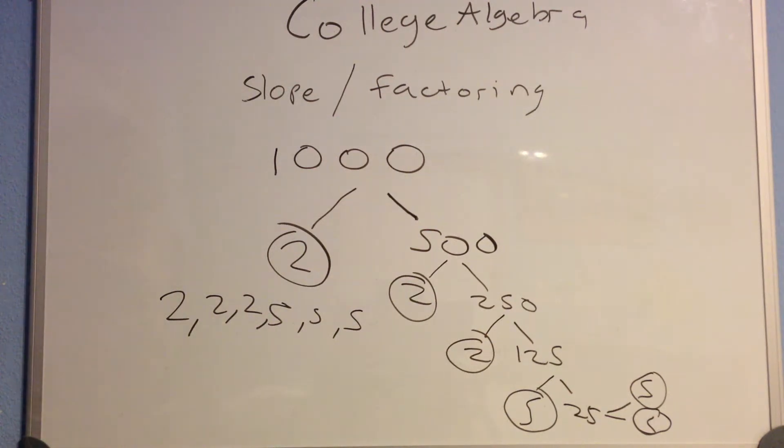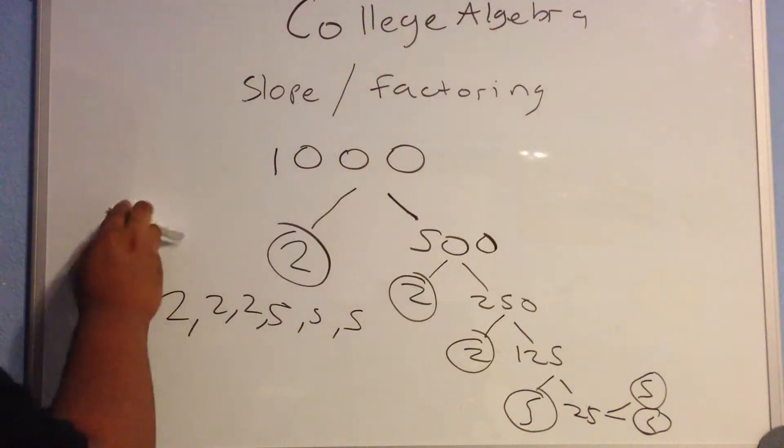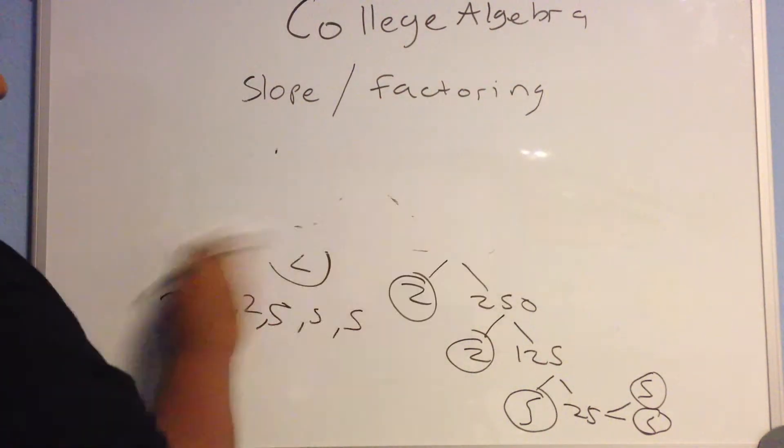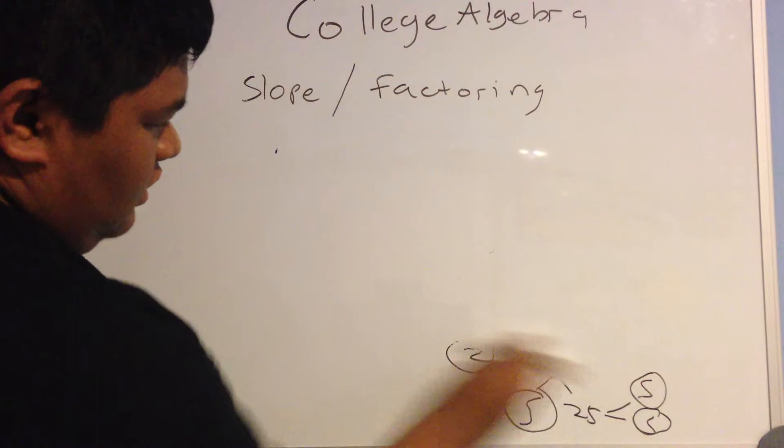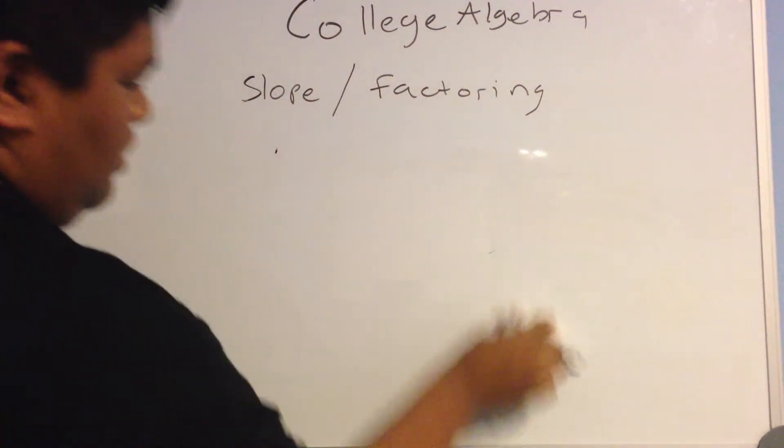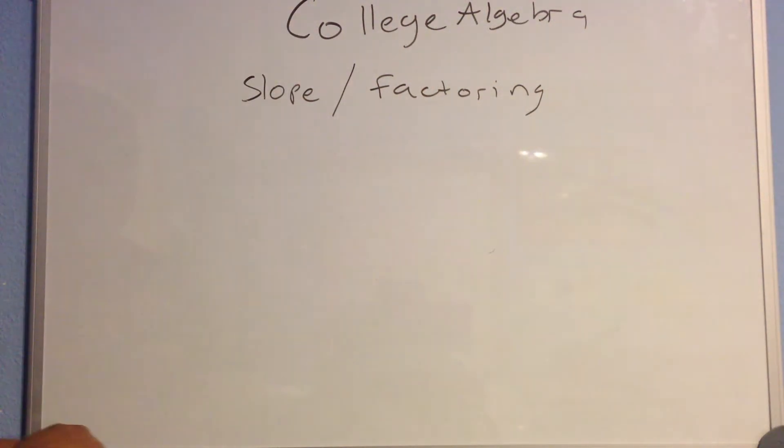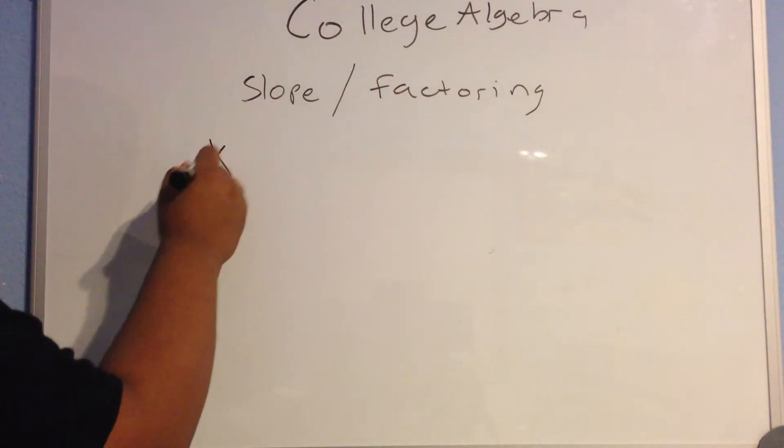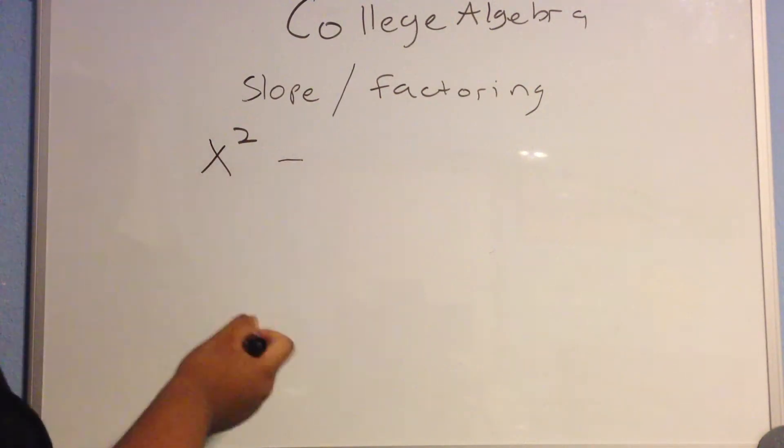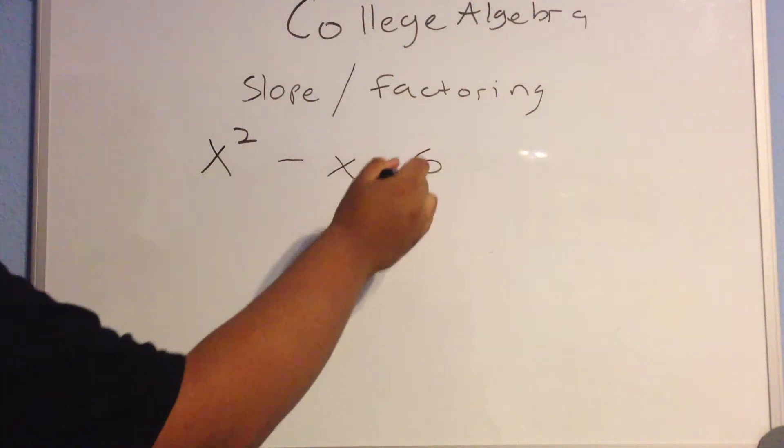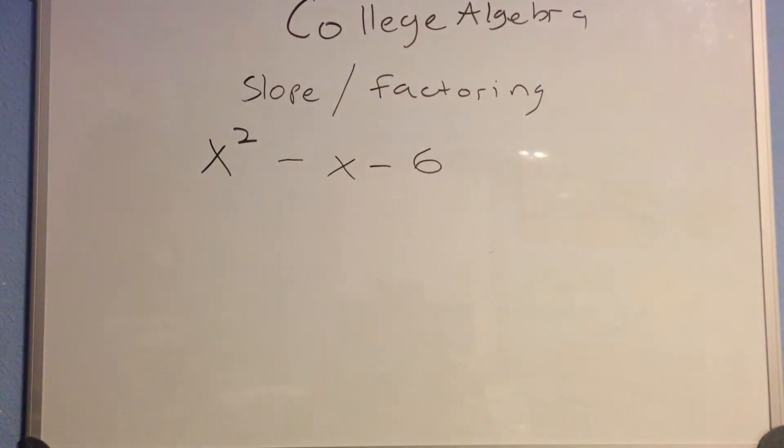Now we are going to attempt to factor a quadratic equation. Let's see how that works out. Let us factor x squared minus x minus 6. How would you factor this? First of all, you have to be familiar with quadratics and the basics of it.